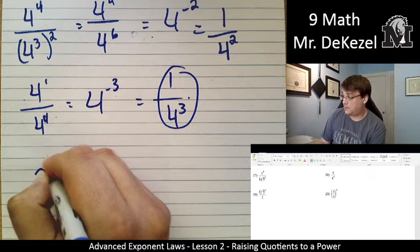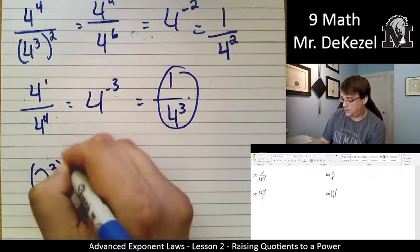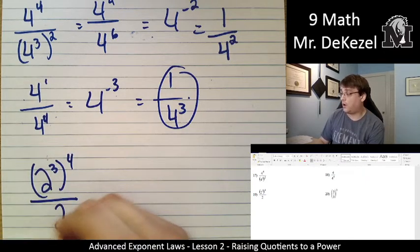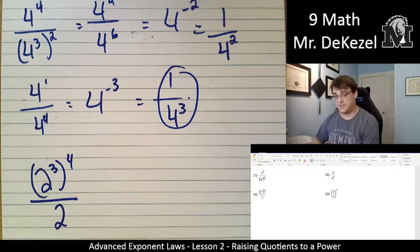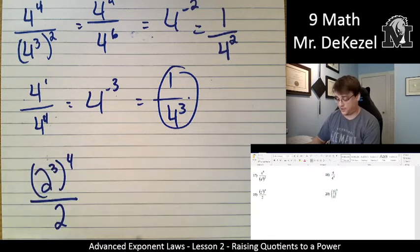Next problem: 2 to the power of 3 to the power of 4, all divided by just 2. The brackets do not encompass the entire thing, so we are just going to do the top first and then work through it.